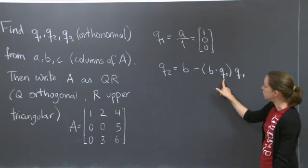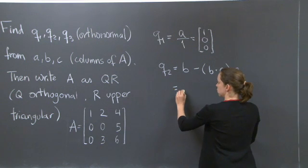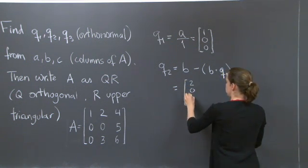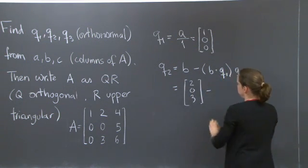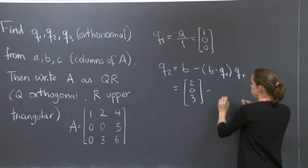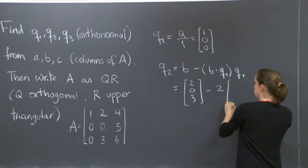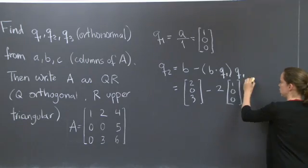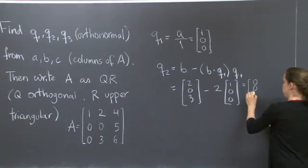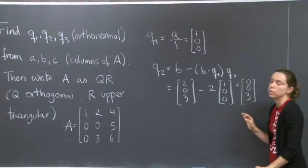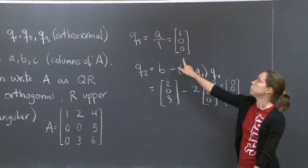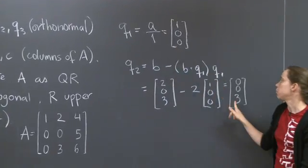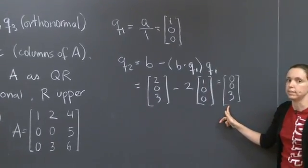So what will it be here? Well, b dot Q1 is going to be, let me write, b is 2, 0, 3, minus b dot Q1 will be 2 times 1, 0, 0. So this will be 0, 0, 3. This vector is orthogonal to this one, and you can check by doing their dot product. It should be 0, and it is.